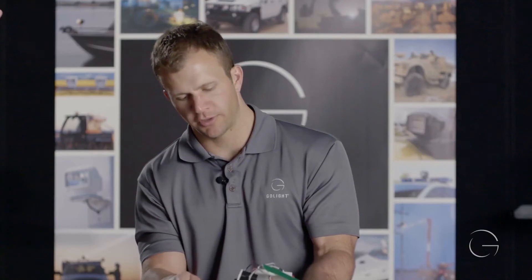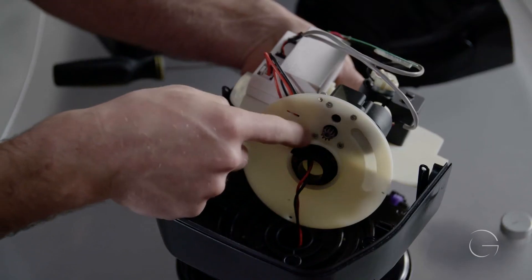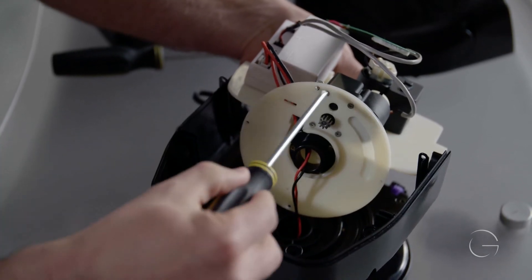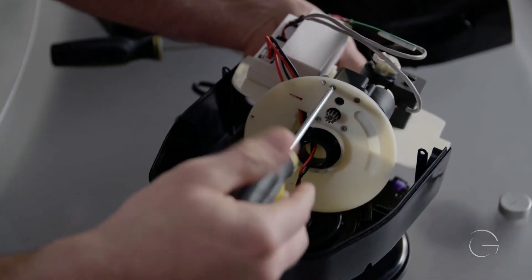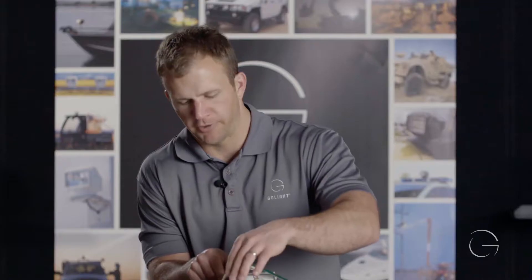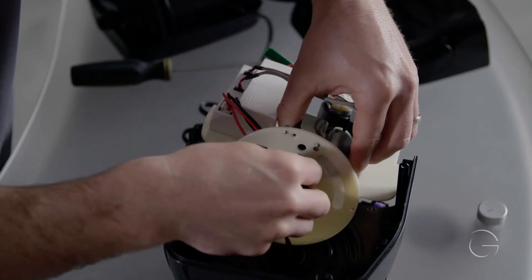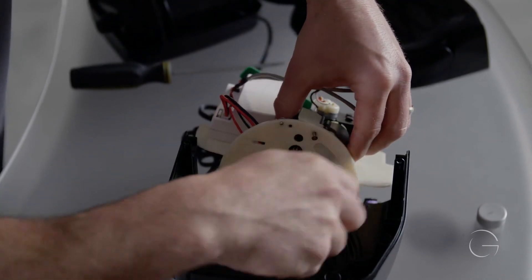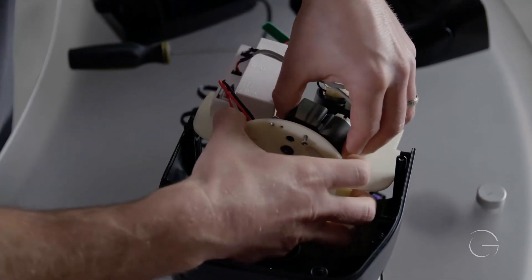To remove the horizontal motor and gear we will remove the four screws that are holding. After getting those removed just pull the motor off.